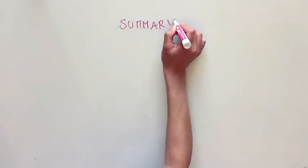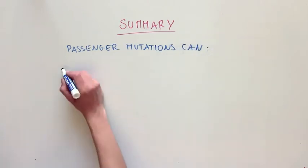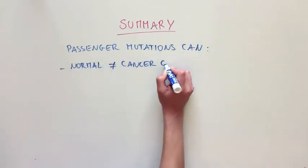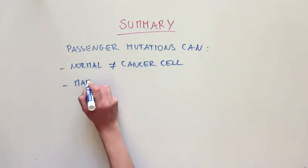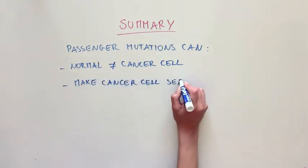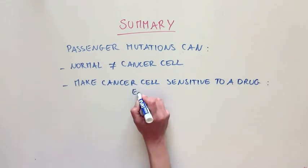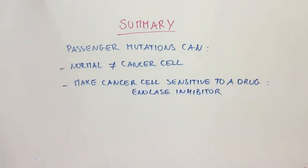So what did this study show? This study showed that passenger mutations can be used to differentiate between a normal and a cancer cell. This is because certain passenger mutations can make a cancer cell more sensitive to a specific drug, in this case an anylase inhibitor, than a normal cell, even if this passenger mutation does not contribute to causing the cancer.